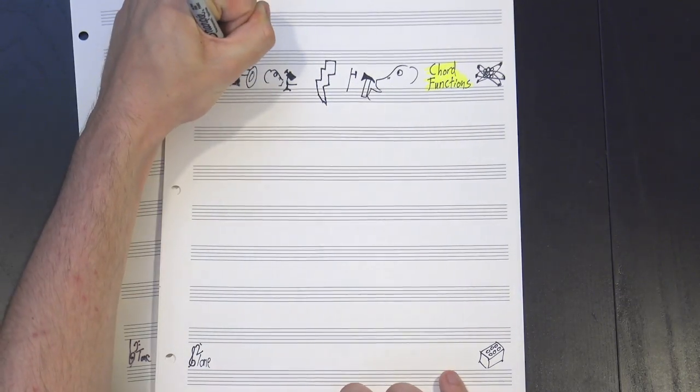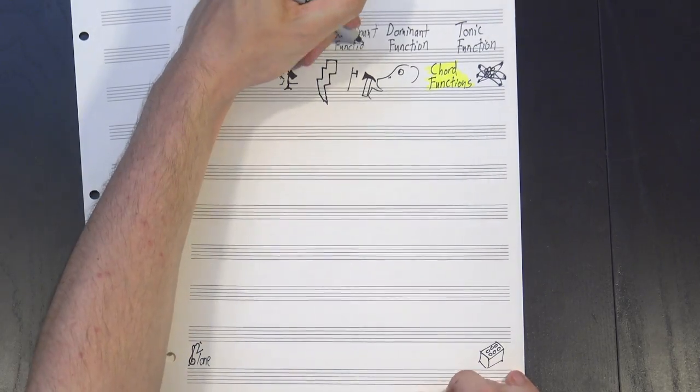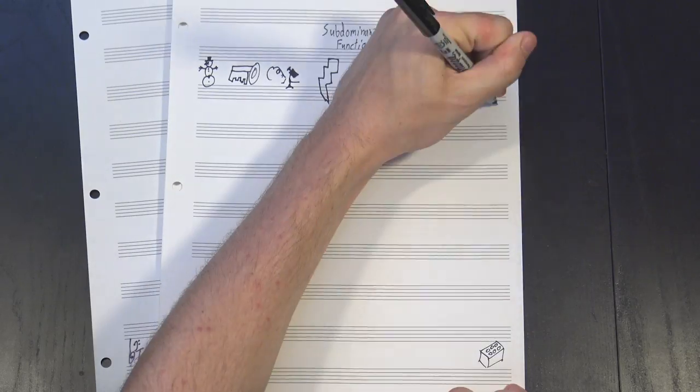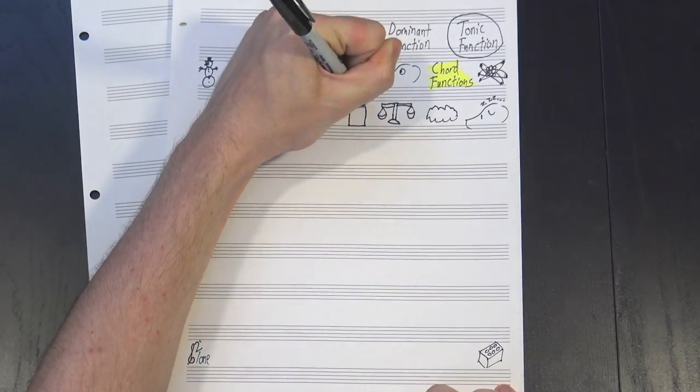As a refresher, we break chords in a key into three main groups: tonic function chords, dominant function chords, and subdominant function chords. Tonic function chords are the ones that provide a sense of rest. They're calm, they're stable, and they don't take a lot of mental energy to process.